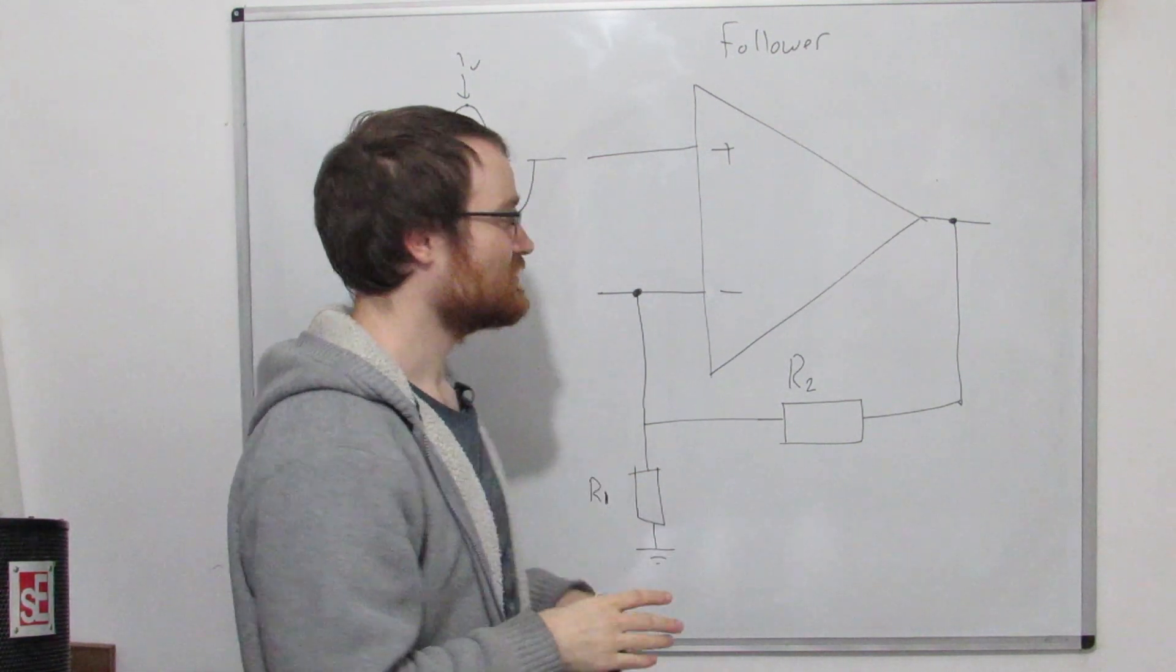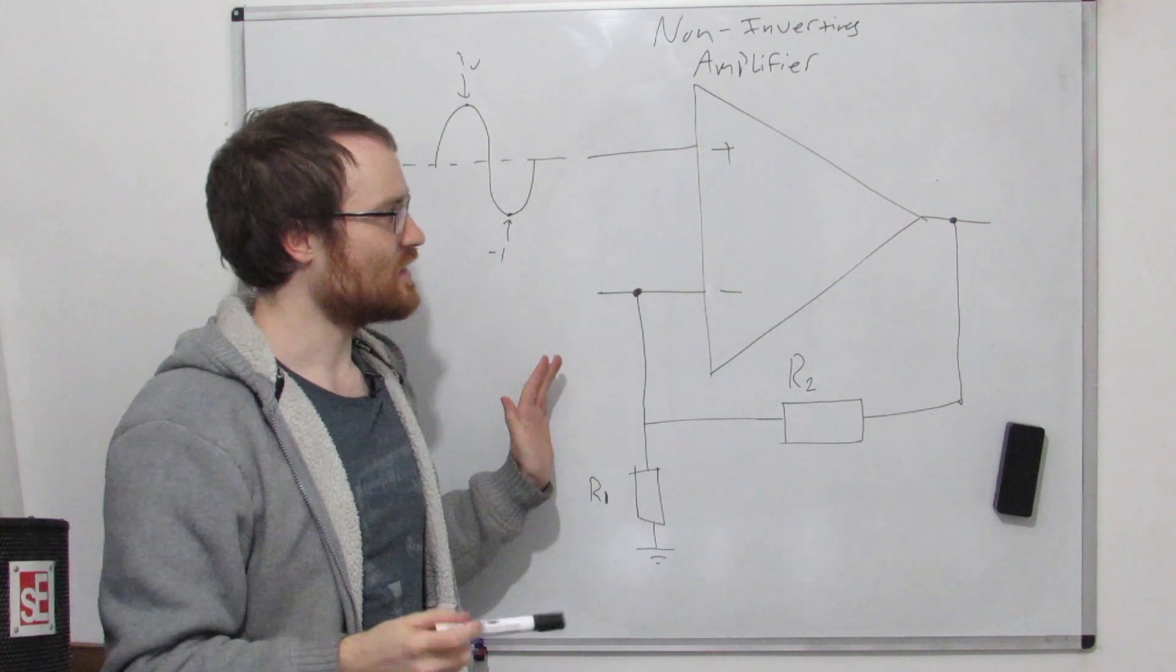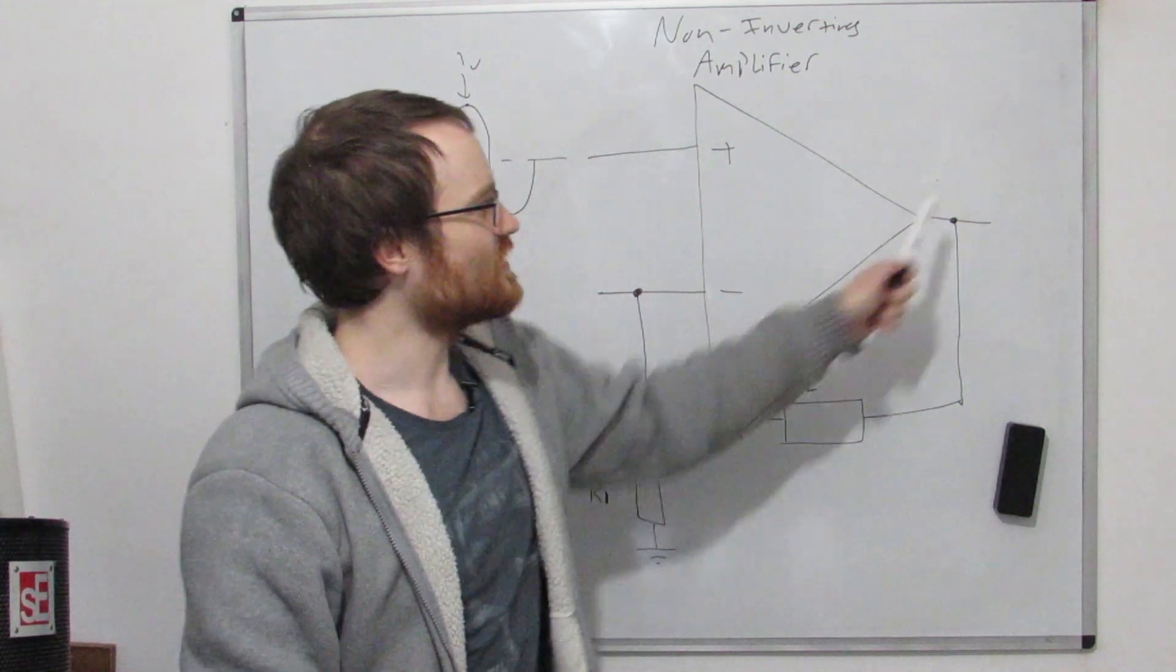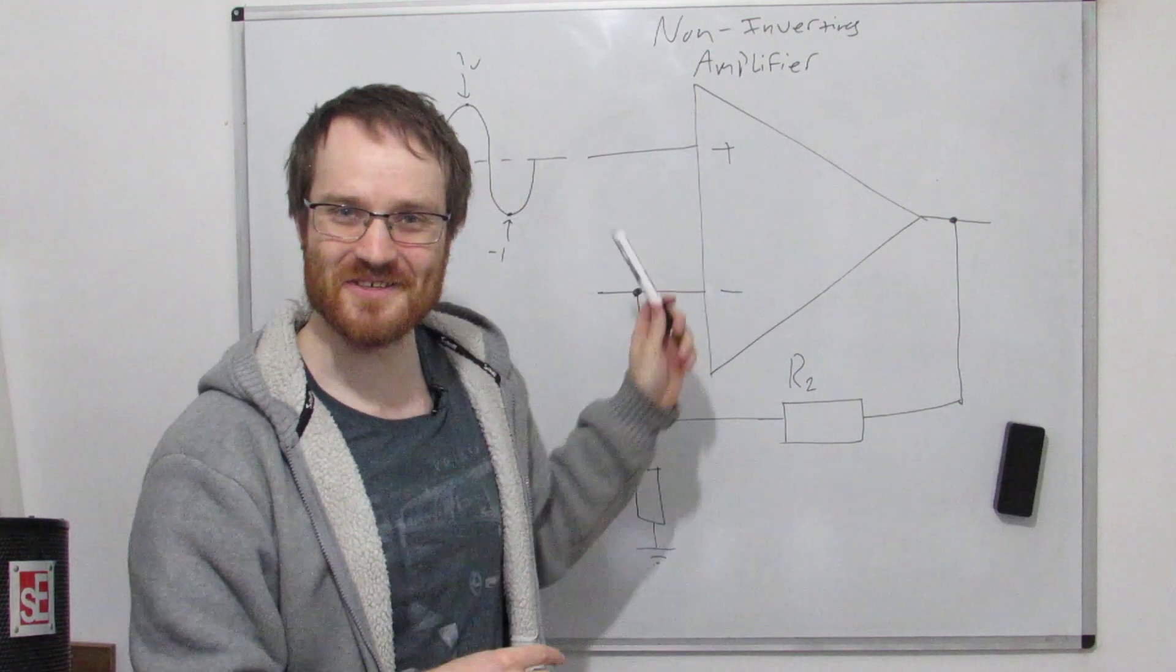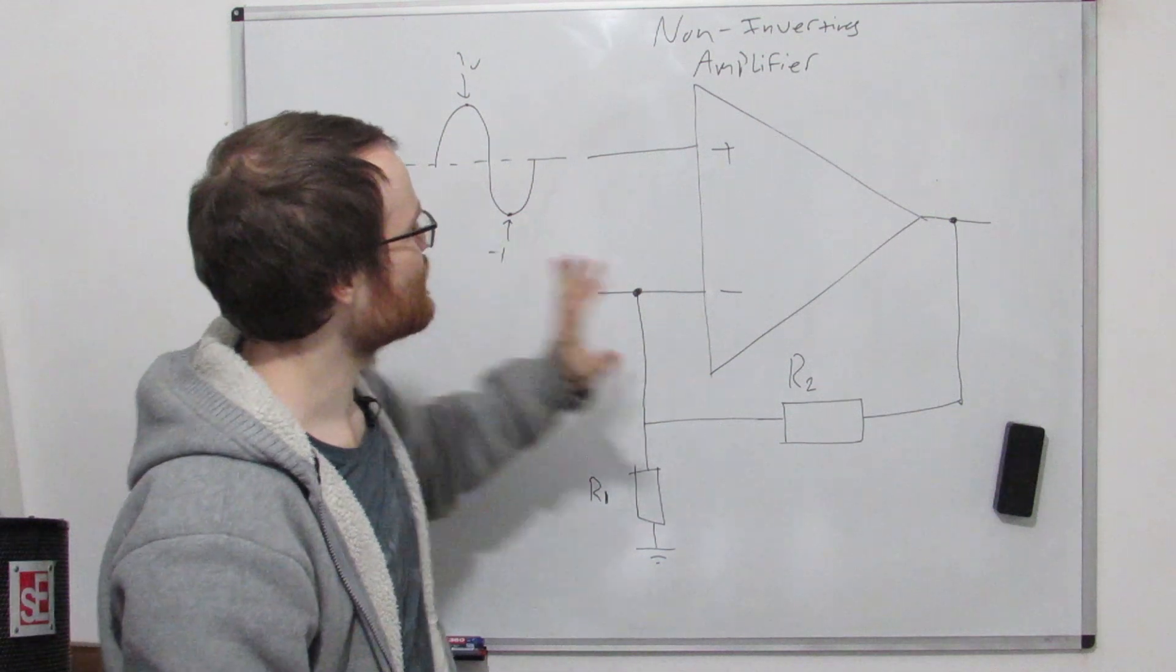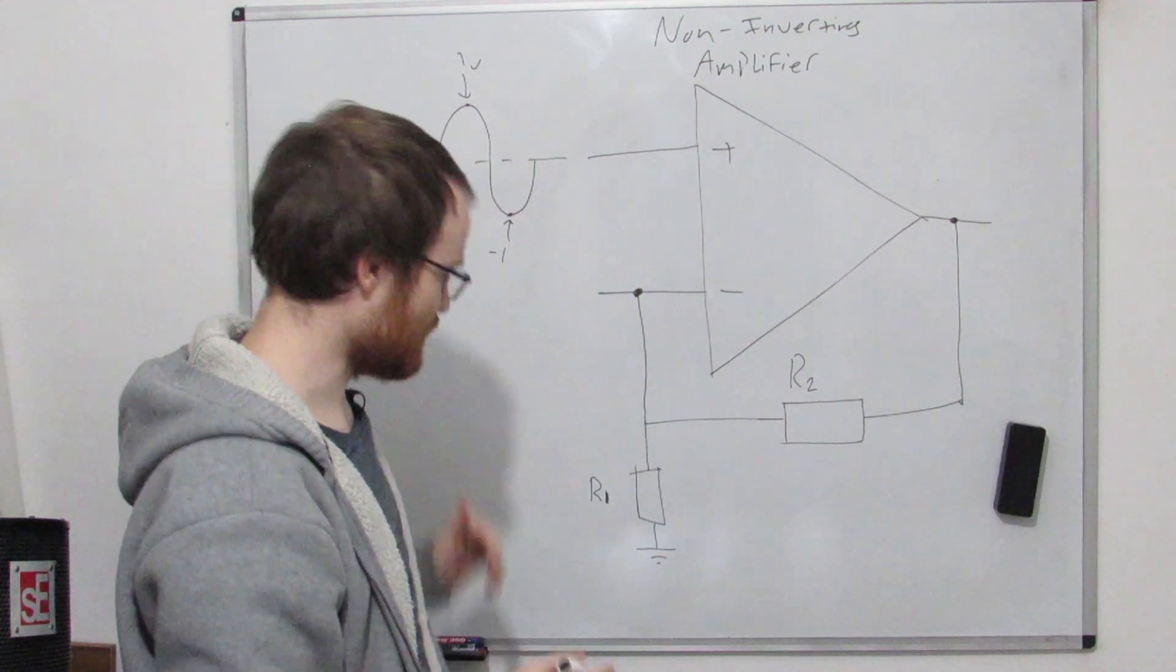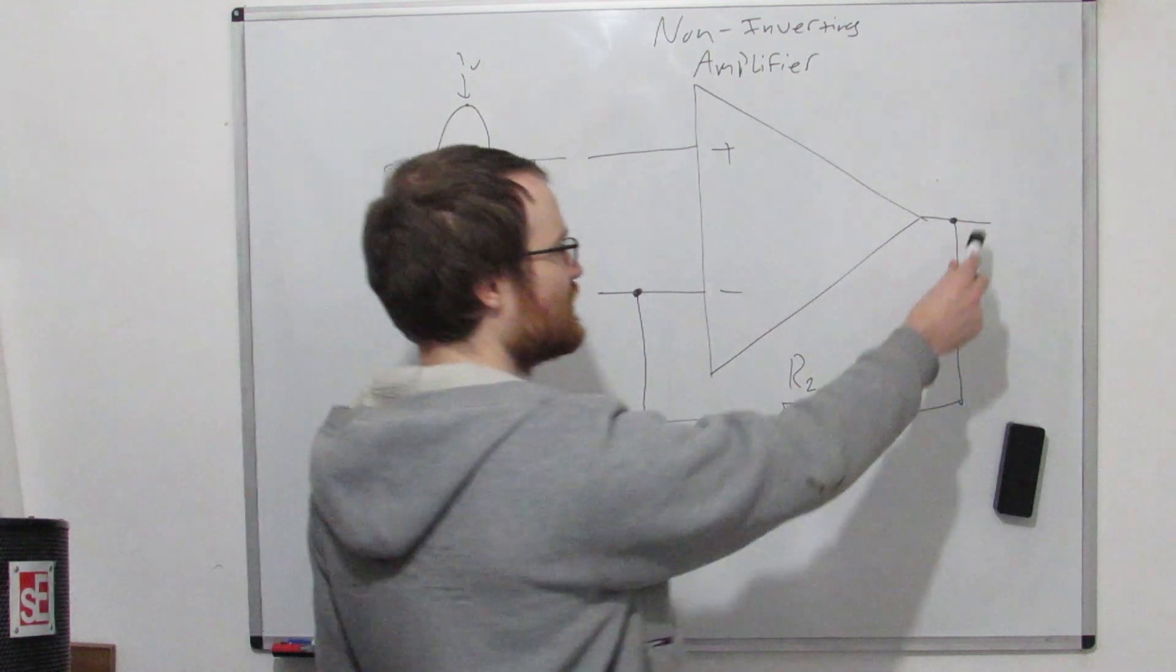This is now a non-inverting amplifier, and we can imagine that the output is still going to look something like this input. Obviously, I've already given it away and told you that it's non-inverting. So how do we tell what the relationship is between the output and the input?